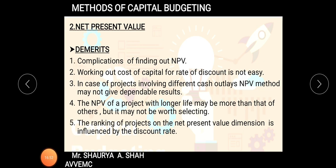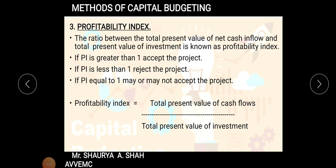Now starting with the next method — Profitability Index, or PI. So far we have completed ARR and NPV, and now we start with PI. If you are clear with NPV, you will be very clear with PI as well. This method gives the ratio between the total present value of net cash inflows and the present value of investment — instead of deducting the investment, we divide the total present value by the investment.